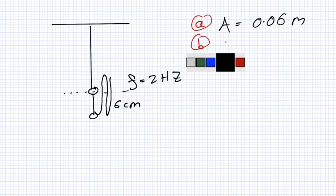Part B, what is the periodic time? The time is one over f which will be 0.5 seconds.